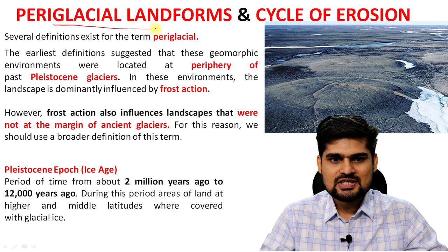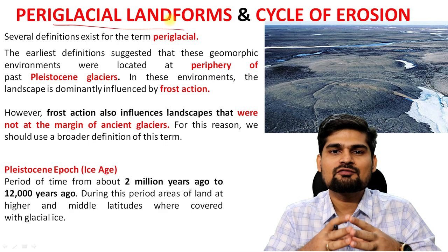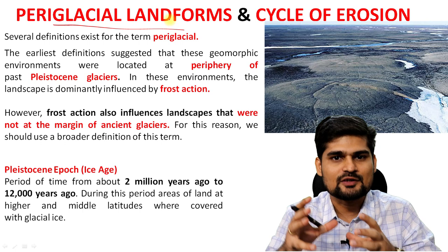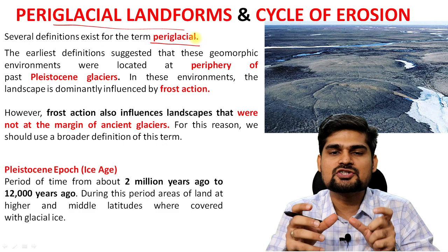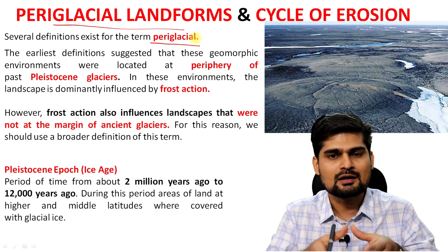First we'll be talking about periglacial landforms, their processes, their nature, and at the end we'll be talking about the cycle of erosion. So what do you understand by the term periglacial? In simple words, periglacial means in the periphery of the glacial zone. It means it is not exactly a glaciated area, but because it is in the periphery of a glaciated area, it will have permafrost conditions.